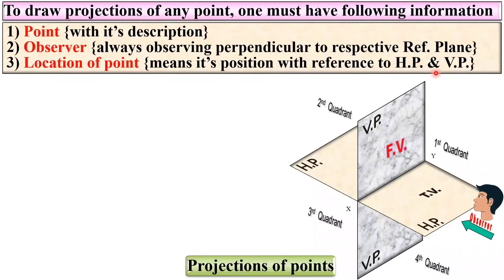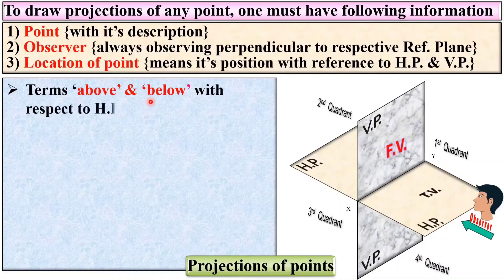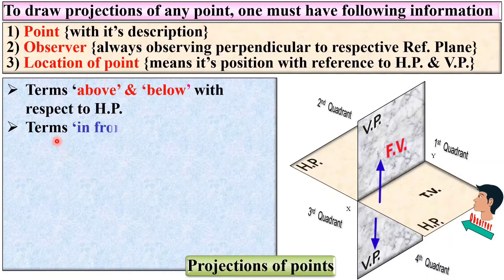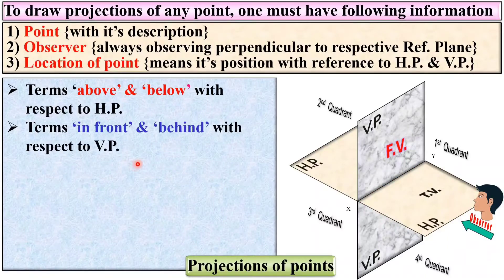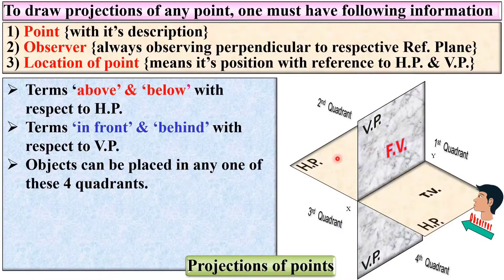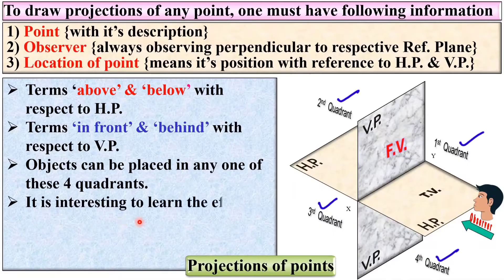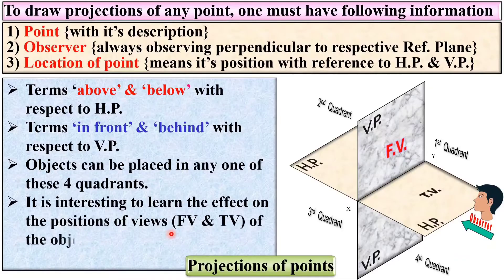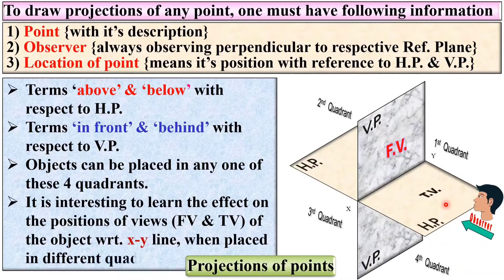Try to understand the location of the point with reference to HP and VP in detail. The terms 'above' and 'below' are used with respect to HP — a point can be above HP or below HP. The terms 'in front' and 'behind' are used with respect to VP. Objects can be placed in any one of the four quadrants. It is interesting to learn the effect on the positions of views like front view and top view of the object with respect to the XY line when placed in different quadrants.